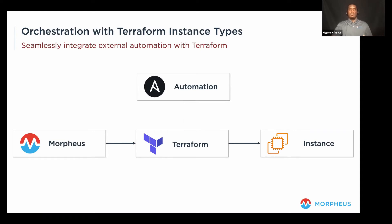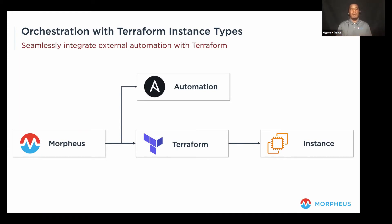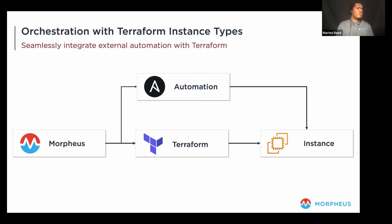With Terraform instance types, that model changes: Morpheus, as part of the provisioning workflow, interfaces with the automation — whether Ansible, a Python script, or a bash script — anything supported by Morpheus provisioning workflows. This provides the ability to tie all the existing governance and capabilities around provisioning workflows that are native to Morpheus with instances provisioned via Terraform, including triggering configuration via Ansible as part of the process.